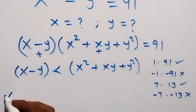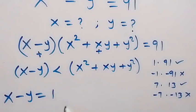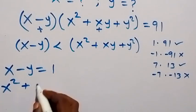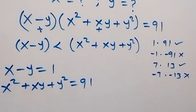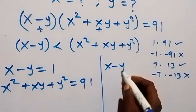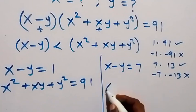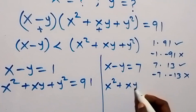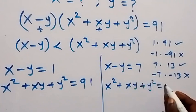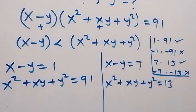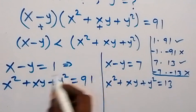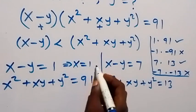For the first case, we have x minus y equals 1, and x squared plus xy plus y squared equals 91. From x minus y equals 1, we take minus y to the other side and make x the subject, so we have x equals 1 plus y.